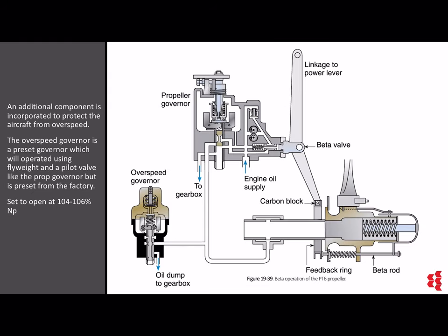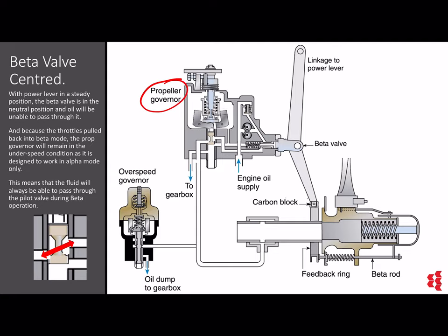And that's where this slide comes in. You can see the linkage to the power lever — that's where the power lever push-pull rod will be coming in and controlling that beta valve. When the power lever is brought back, we don't have a lot of fuel going to the engines and it's not going to be turning very quickly. So the prop governor itself will be in a perpetual under-speed condition. Here I've illustrated it where you can see the prop governor is in the under-speed condition — that's how you know we're below alpha mode operational range. The engine oil supply is going to be coming up and around the pump and coming to the beta valve. When the beta valve is centered, there's no oil getting to the prop, so the prop angle will be maintained.